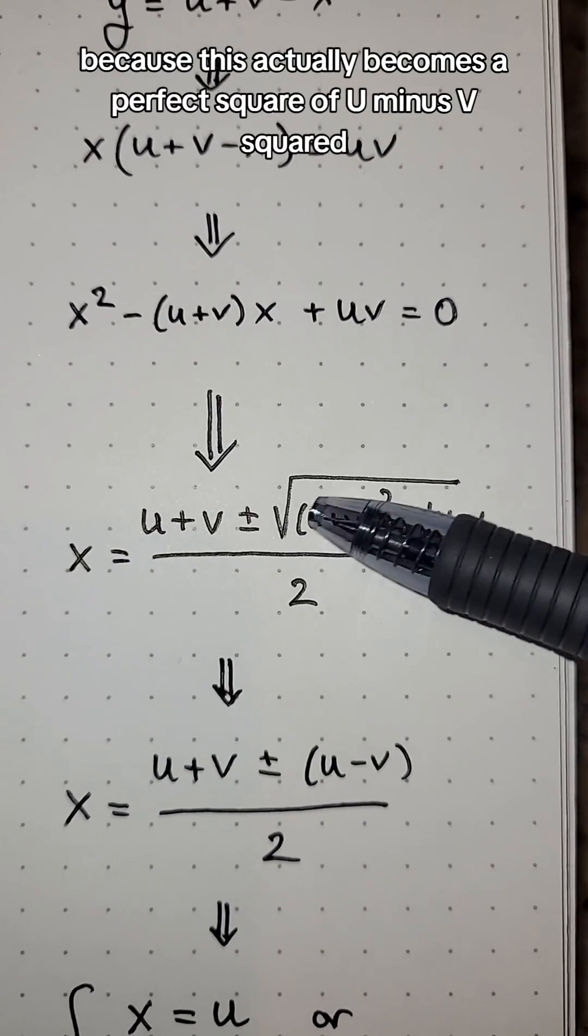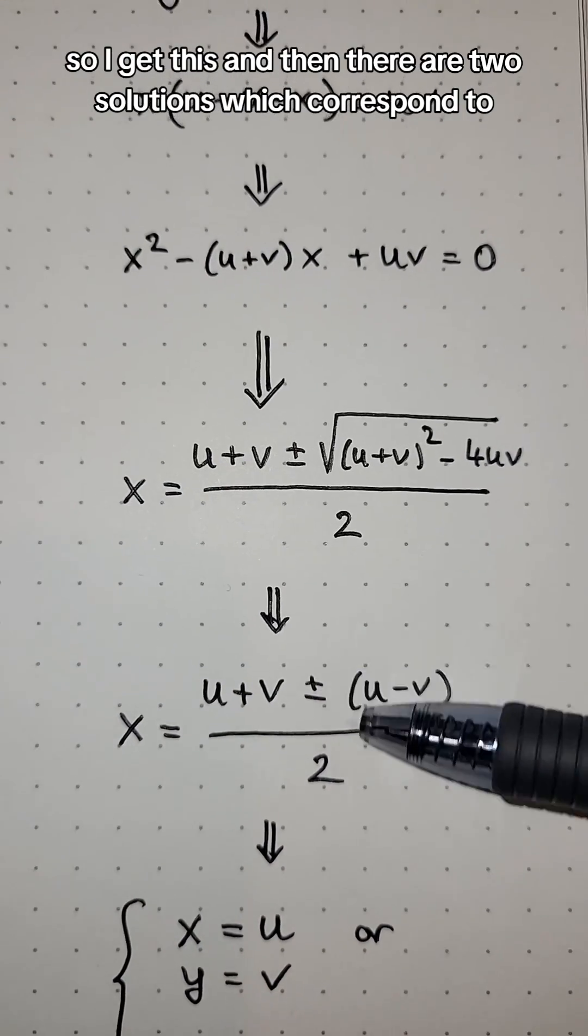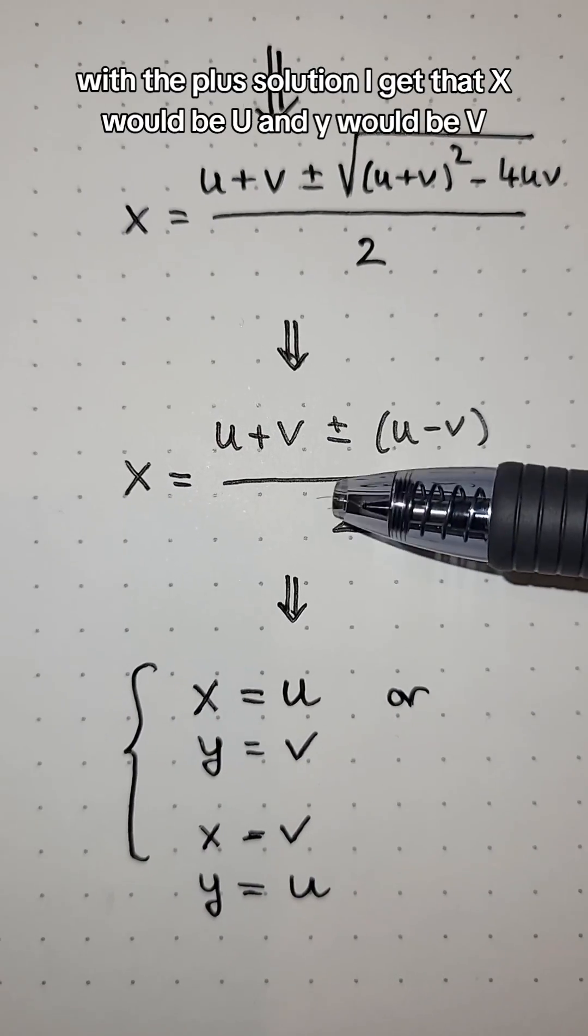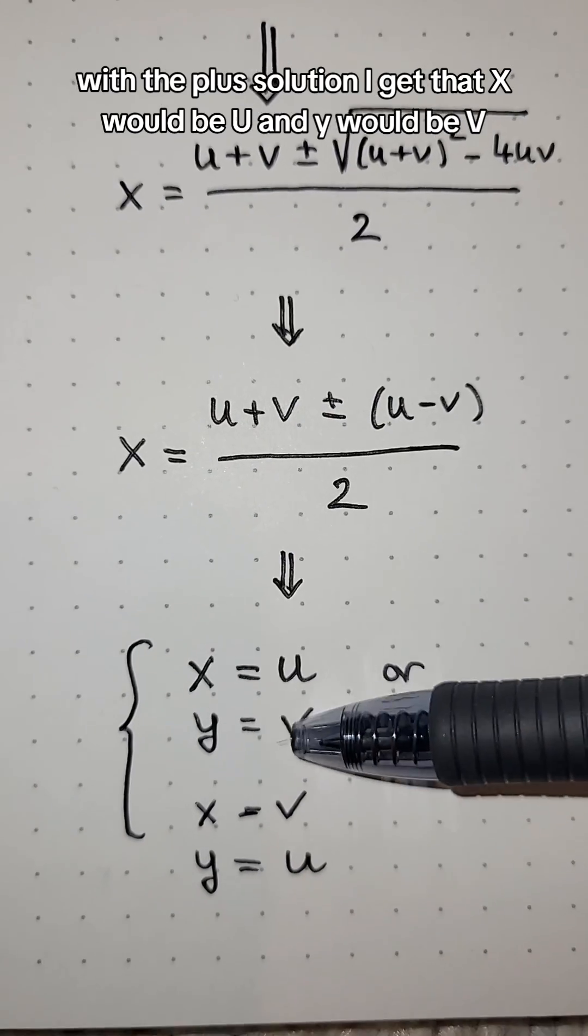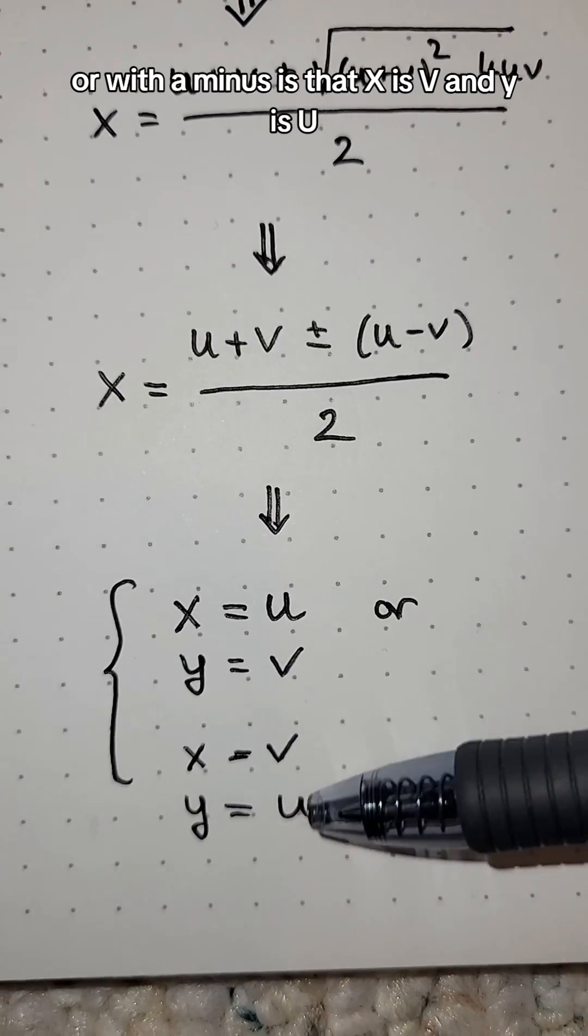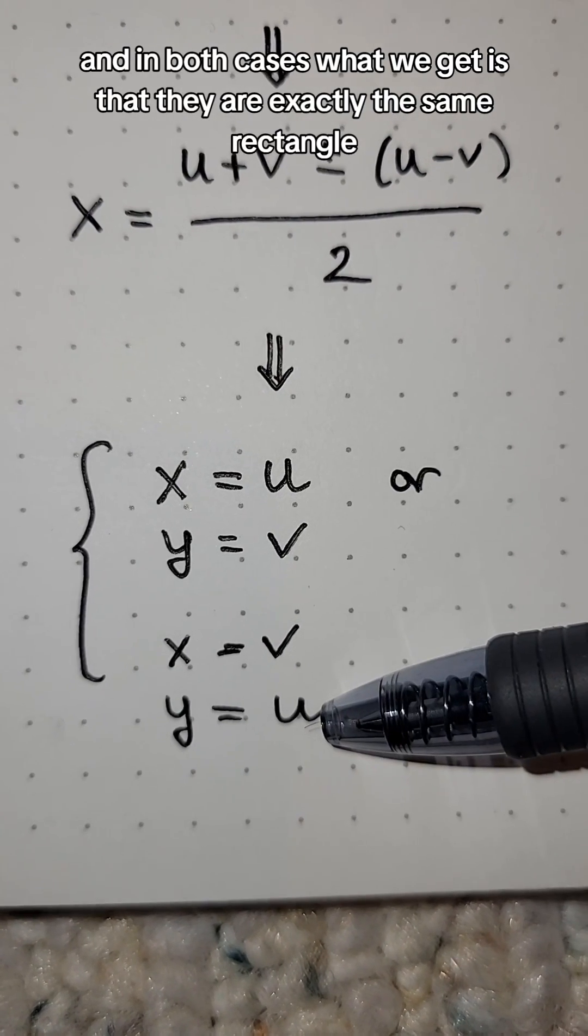Because this actually becomes a perfect square of u minus v squared. So I get this, and then there are two solutions, which correspond to, with the plus solution, I get that x would be u and y would be v, or with the minus, is that x is v and y is u. And in both cases, what we get is that they are exactly the same rectangle.